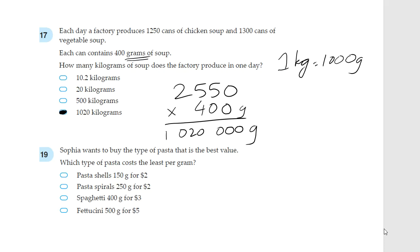Question 19, Sophia wants to buy the type of pasta that is the best value. In other words, she wants to get the pasta which gives her the most for each dollar she spends. So the most weight for each dollar she spends. Which type of pasta costs the least per gram? That's another way of putting it. So, for 1 dollar, let's change everything to 1 dollar.